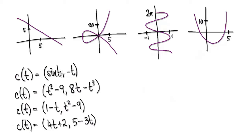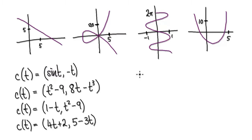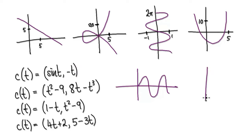Okay, so remember when you look at this: this thing here tells you the x location, and this thing here tells you the y location. So when you look at this, in your mind picture this — in the x direction, it's going to look like your sine graph. And then in your mind draw this graph, y equals minus x, so it looks like this.